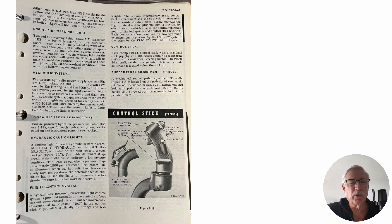But I want to talk about the flight control system in the T-38. This isn't one of your frontline fighters with modern fly-by-wire flight control systems. This is a basic hydraulic system. A hydraulically powered, irreversible flight control system is provided. Air loads on the control surfaces cannot cause control stick or surface movement. Conventional aerodynamic feel in the control stick is provided artificially by springs and bob weights. The springs progressively resist control stick displacement, and the bob weights mechanism further restricts aft stick travel during maneuvering flight. The bob weights are supposed to dampen out aggressive stick maneuvering.